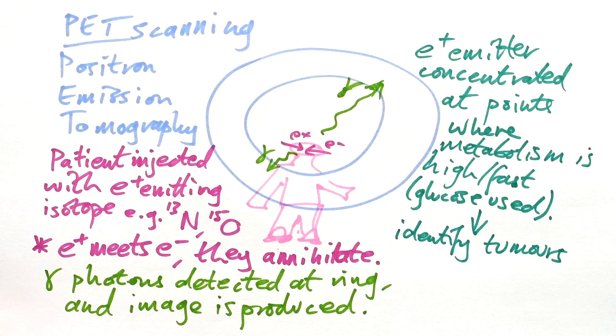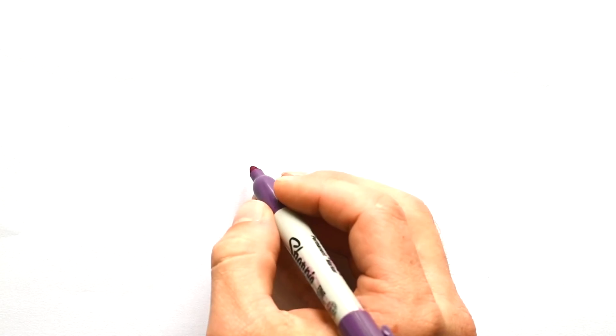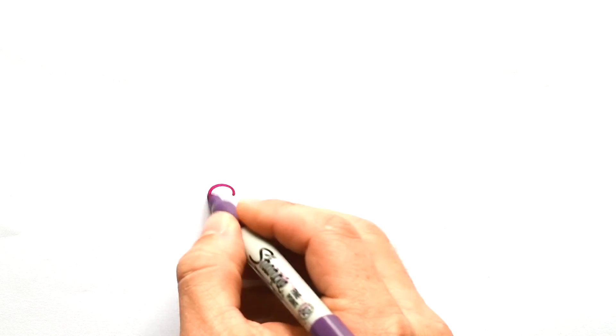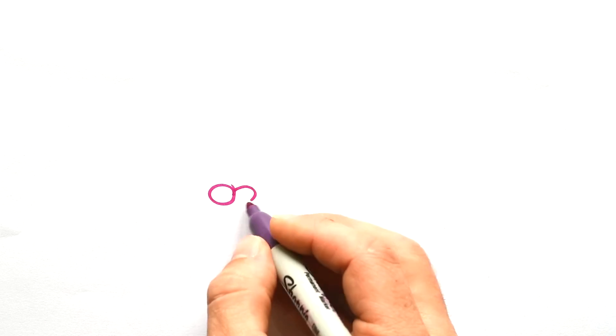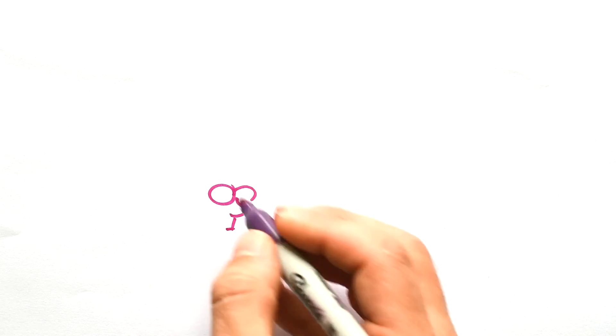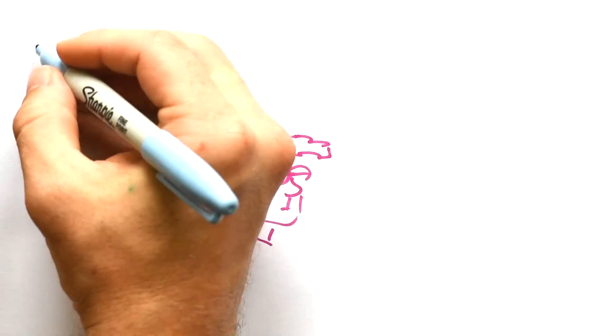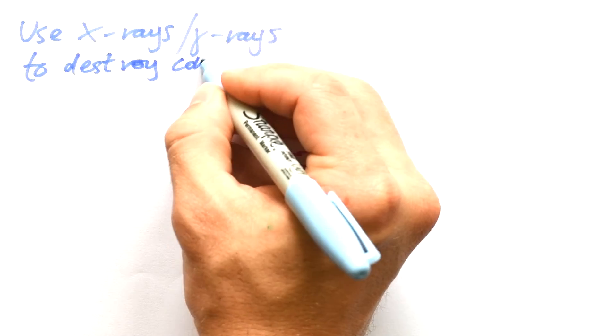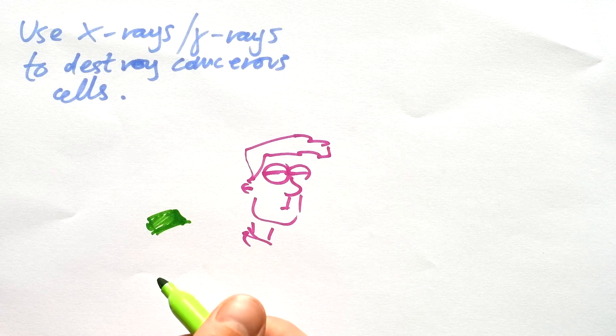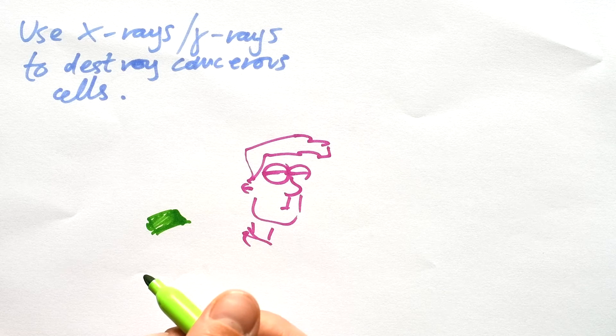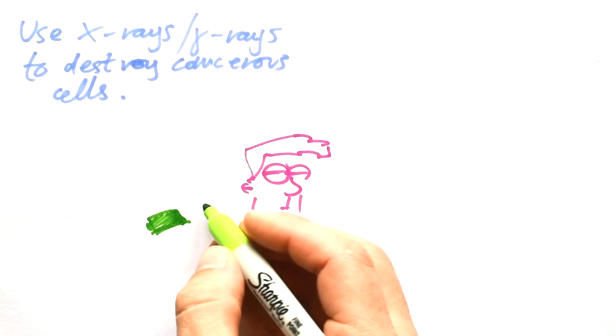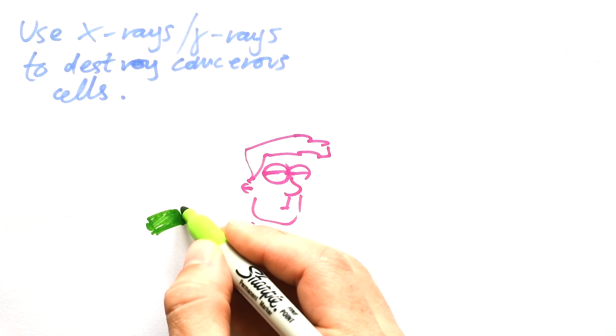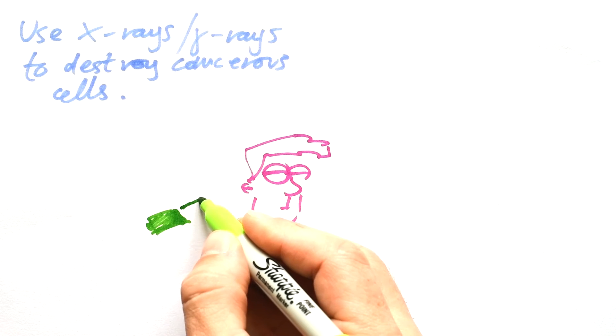Well, you can use radiation to combat that too. Let's say that somebody is unfortunate enough to have a cancerous growth in their brain. What you can do is use x-rays or gamma rays to destroy cancerous cells. Yes, you can use this radiation to damage cancerous cells, but it can damage healthy cells as well. So the first thing you want to do is make sure that your beam is going to be focused.